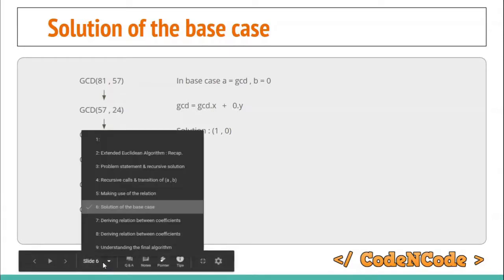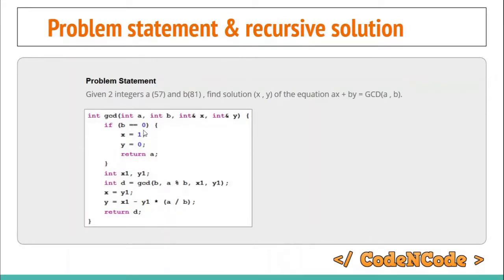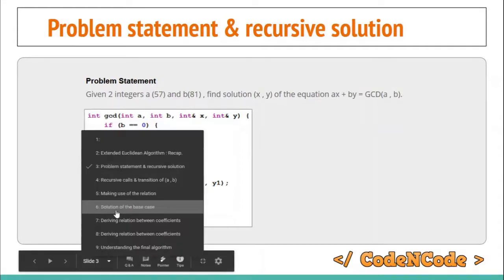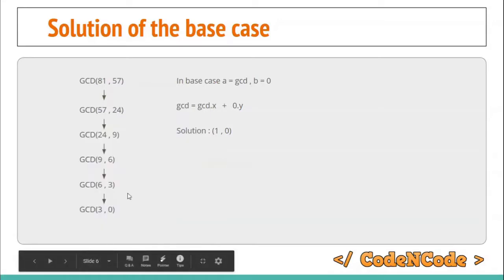That is why, in the code, when the base case b=0 is reached, we set x=1 and y=0. The base case equation is gcd = gcd·x + 0·y; x=1 satisfies this. You can try setting y to a non-zero value and see whether it affects the overall answer.